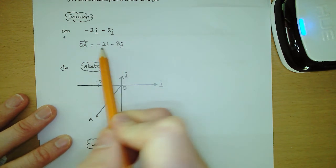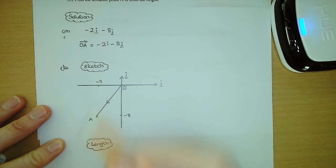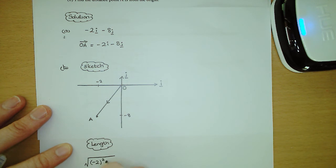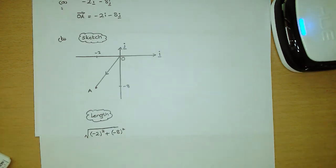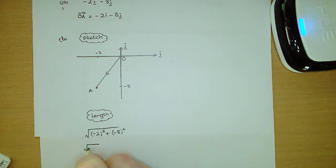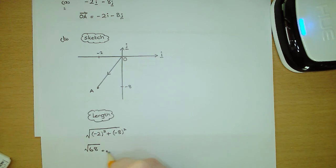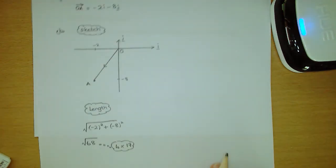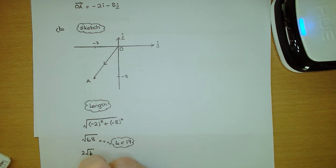We have the vector OA in component form, so to get the length it's just the square root of the i component squared plus the j component squared. That gives us minus 2 squared, which is 4, plus minus 8 squared, which is 64. 4 plus 64 gives us 68, so we've got the square root of 68. You can simplify this — the largest square number to go into 68 is 4, so you can write it as 4 multiplied by 17. Using surd rules to break it up: root 4 times root 17, which gives you 2 root 17.